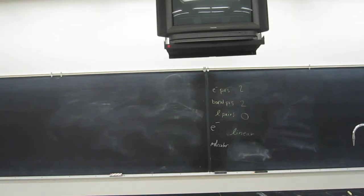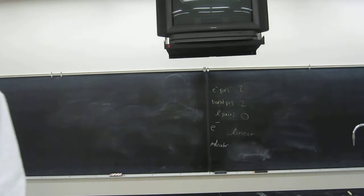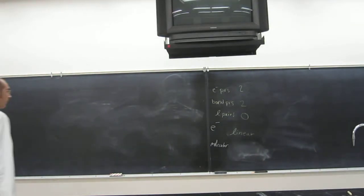If we looked at boron, what did it have? You guys remember? Three bonding pairs and how many lone pairs? Zero, right? So what would be the one that has two bonding pairs and zero electron pairs? BE - yeah, beryllium. Good call.